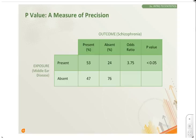Here is a 2x2 table in a study looking at the association of middle ear disease with schizophrenia. The odds ratio is 3.75. We'll cover odds ratio later, but let's assume that this is a significant number.